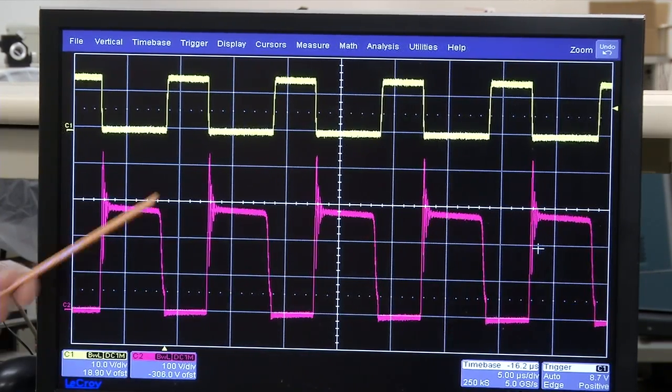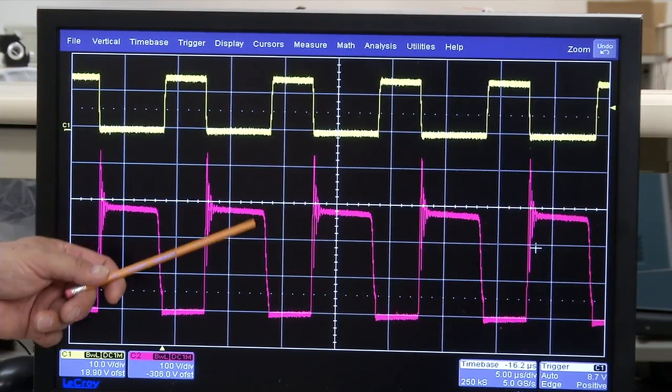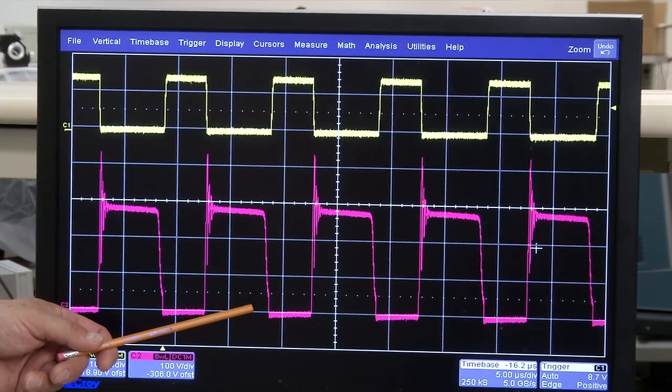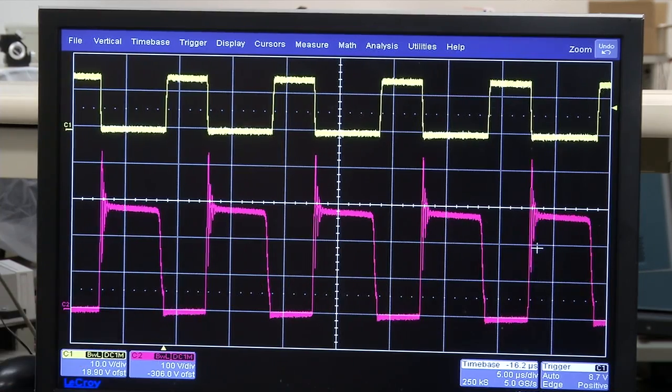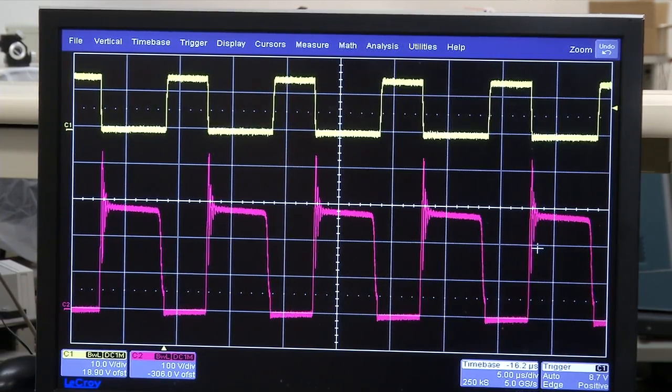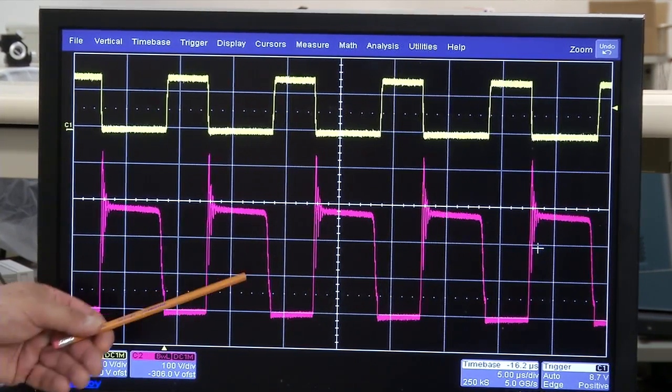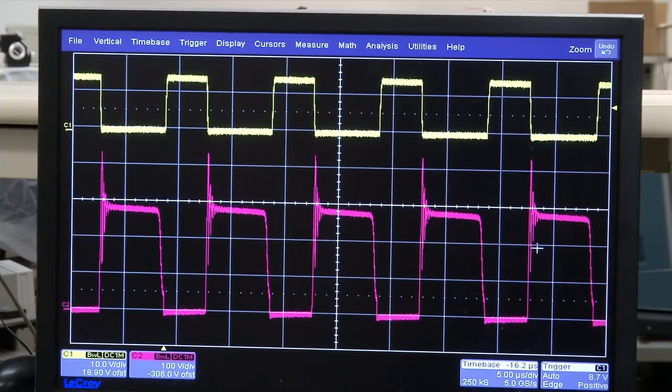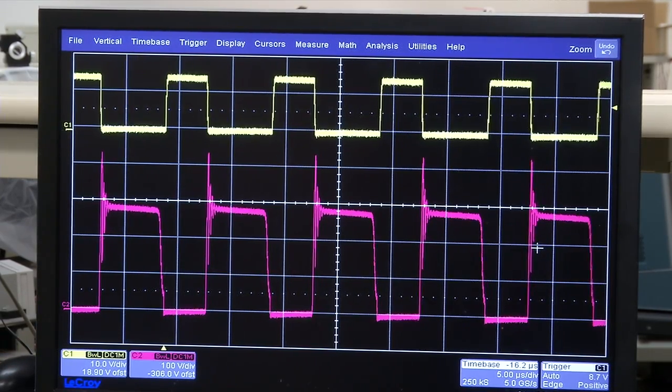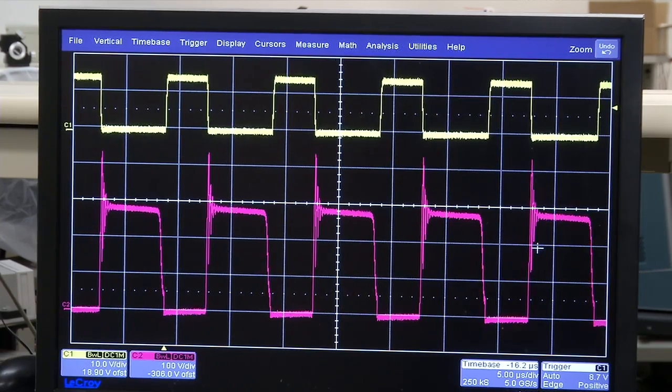At the conclusion of transferring all the energy to the secondary, my drain voltage then rings down towards zero, and I can see right here that is where my primary switch turns back on. Again, achieving very close to zero voltage switching on the primary, coming up with a very high active efficiency.